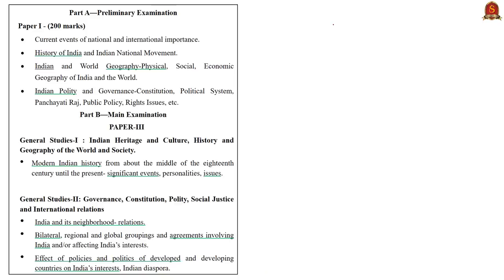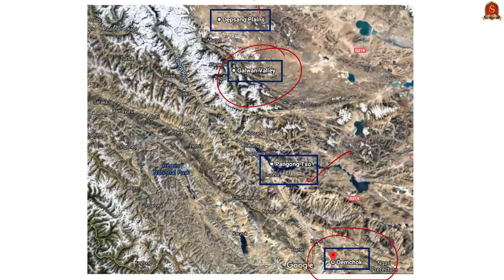As we all know, India and China are on a four-month-long standoff along the Line of Actual Control. Some important points of contention include Pangong Tso Lake, Galwan Valley, Demchok, Depsang Plains, Chushul, etc. The prolonged standoff has made the author conclude that the situation along the LAC resembles the one before the 1962 war.